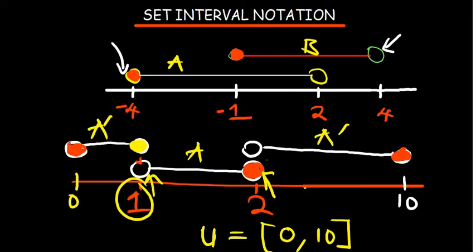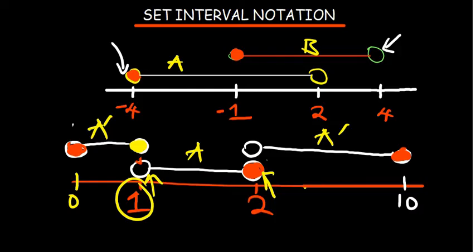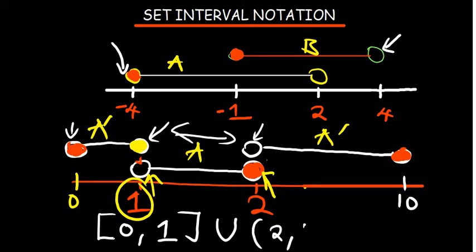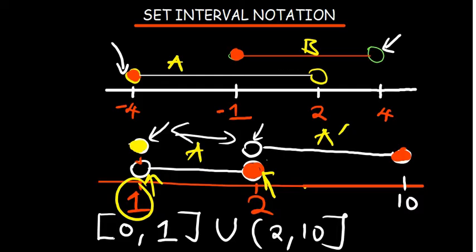So our answer for A complement from the left side: zero is shaded so we write zero using a square bracket, all the way up to one. Notice that one is also shaded. There is a gap in the complement so we use a union to combine them, and then starting from two - two is not shaded - all the way up to ten where ten is shaded. That's how we present our solution using intervals.